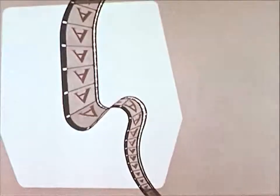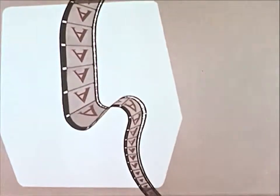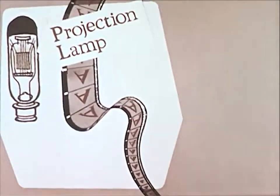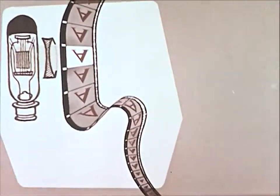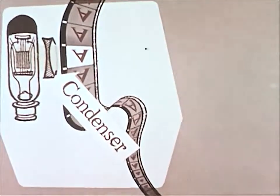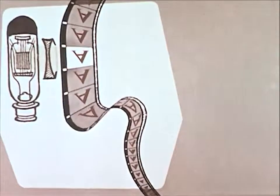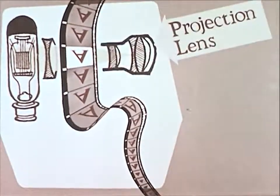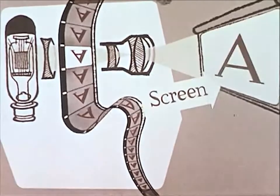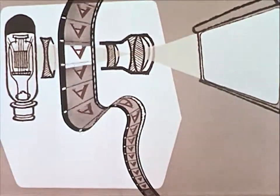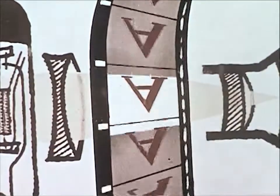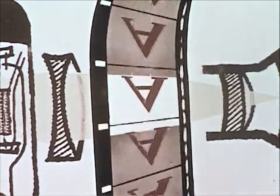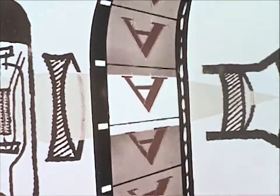As the film moves through the projector, it first enters the picture section. This section consists of the projection lamp, which is a very bright light source. Light is concentrated on a single frame of the film by a condenser lens. The brilliantly illuminated frame of the film is projected by the projection lens onto the screen. The lens is moved to focus the picture. As the film moves through the picture section, it pauses on each frame. In a sound projector, this happens 24 times a second.